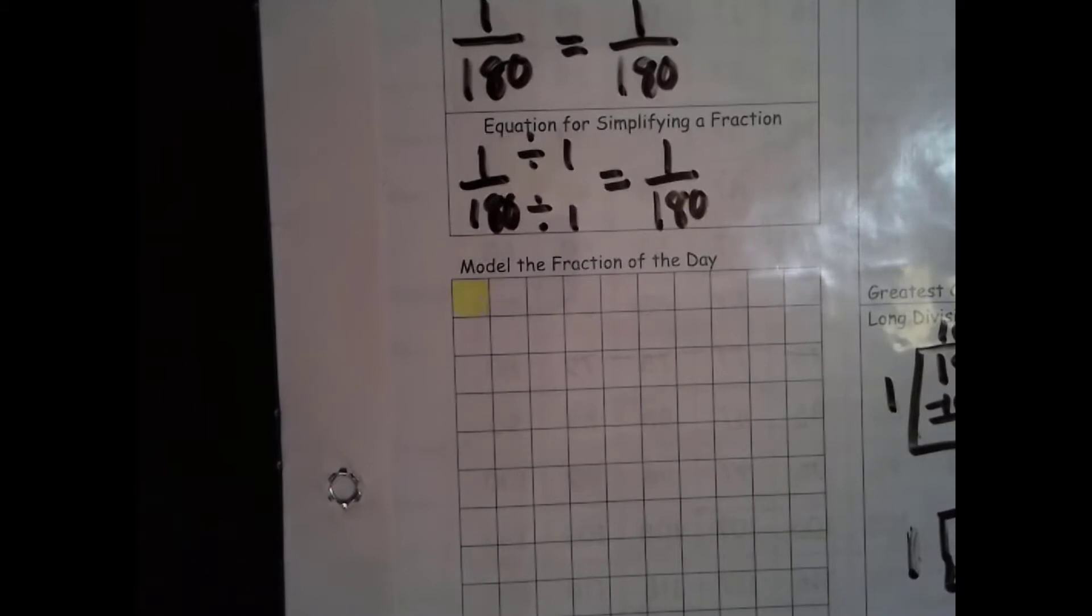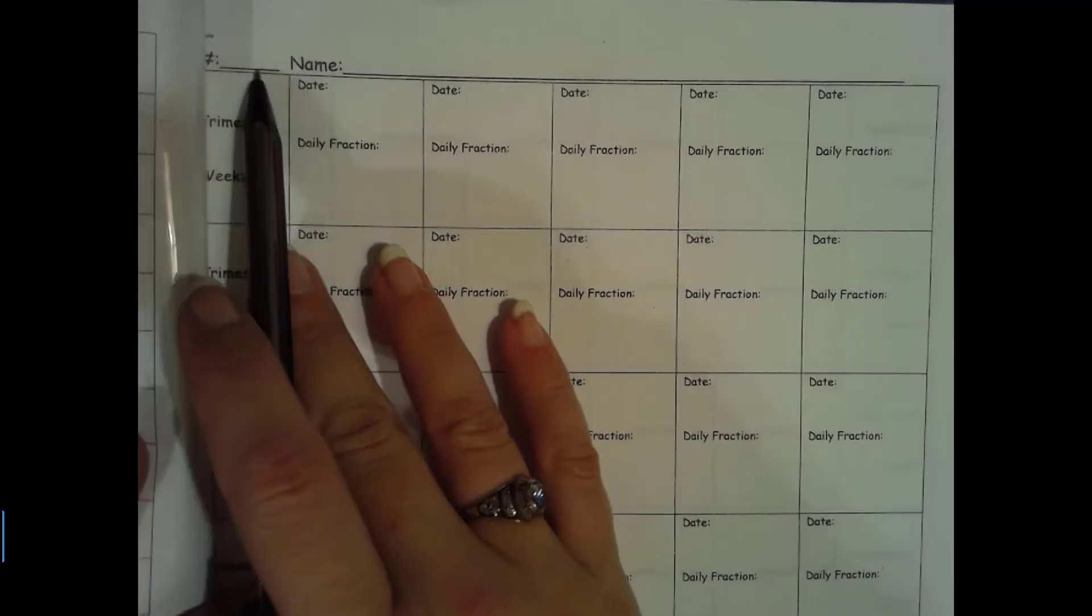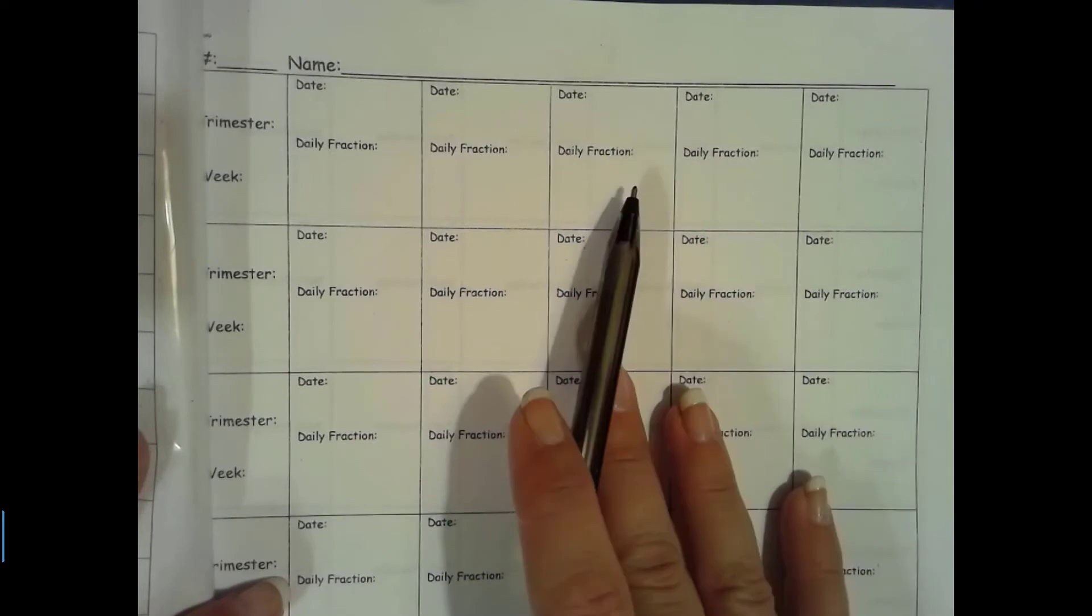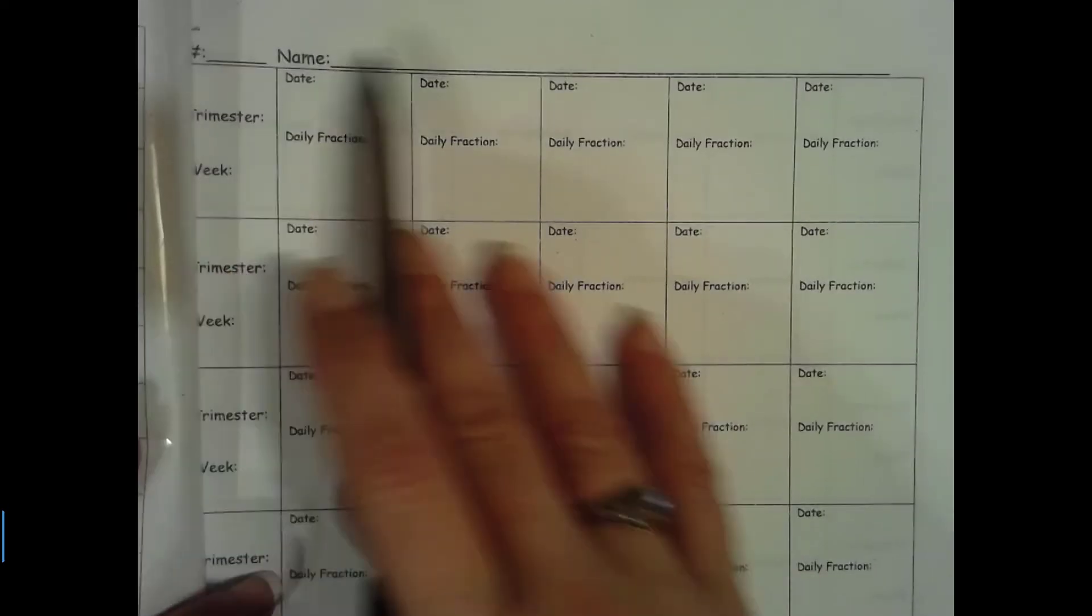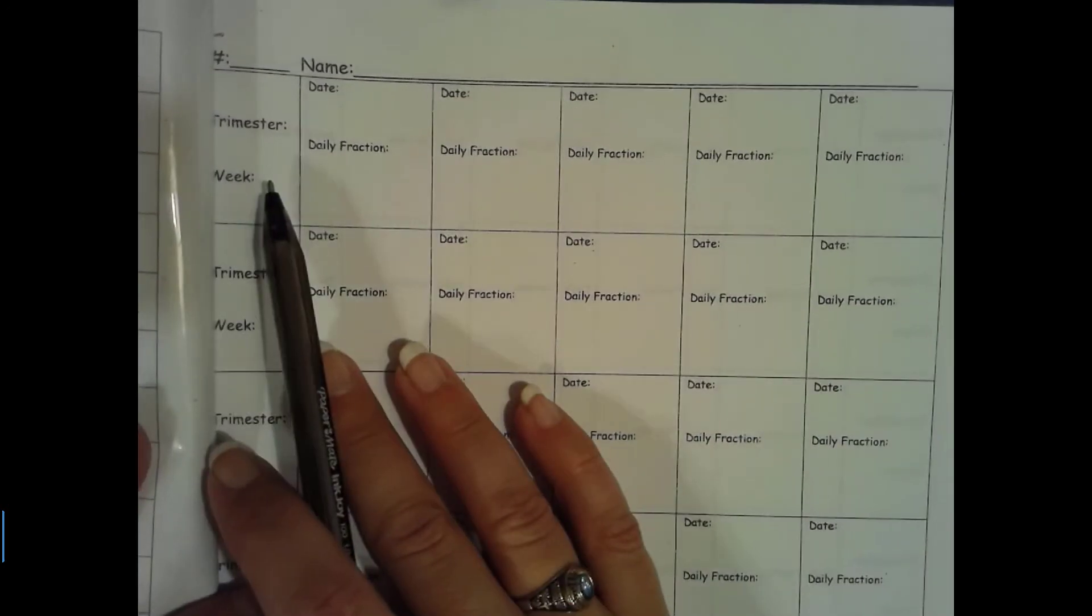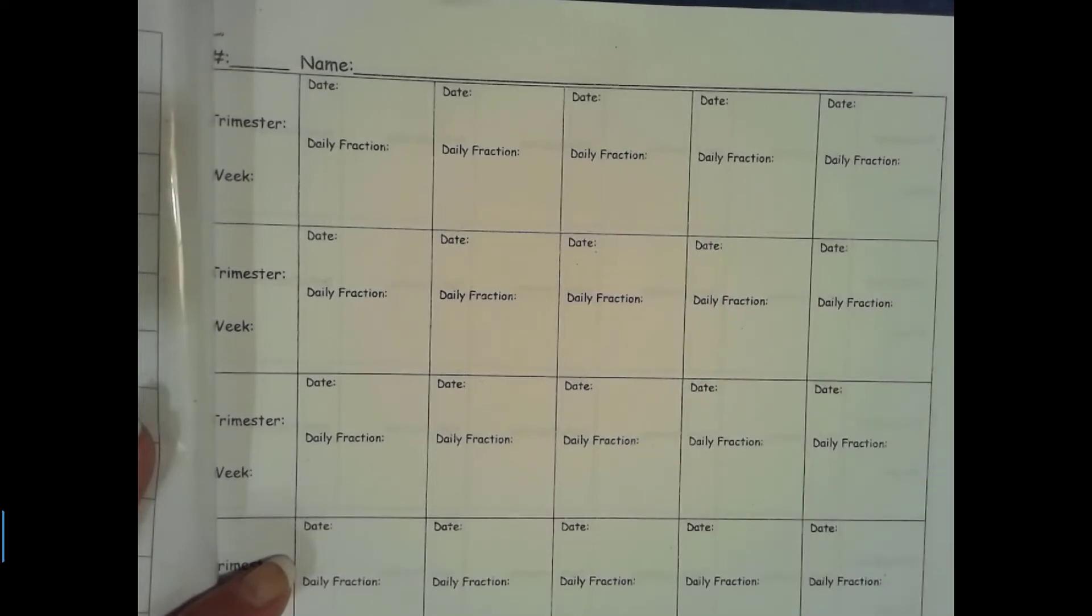So now let's get it written down in our data collection and on our number line. So this is our data collection page. You have a place to put your heading. It's always important to put your heading on in case this gets out of your folder so it can get returned to you. Always make sure you put your number and your name.